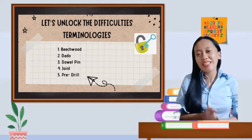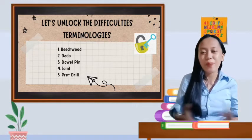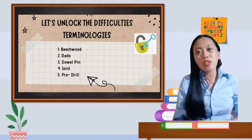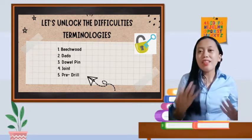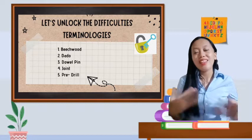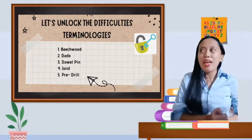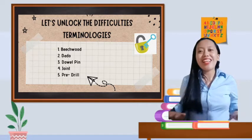And last one, the pre-drill. Pre-drill refers to the drilling of a hole in the work piece that has a smaller diameter than the screw that are end of the screw. And that's all. This is our unlocking difficulties.